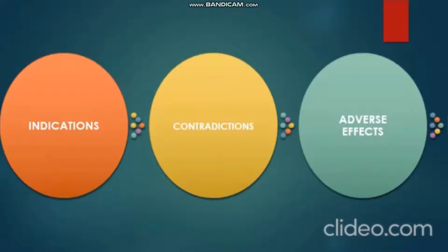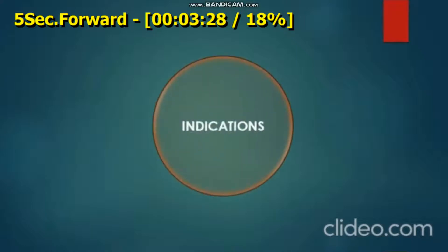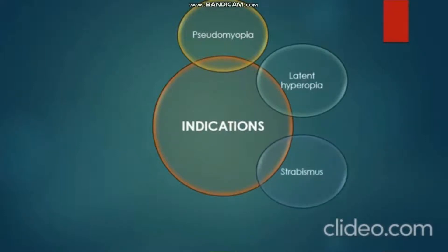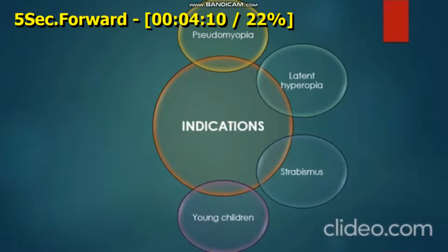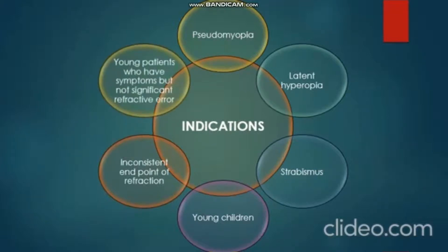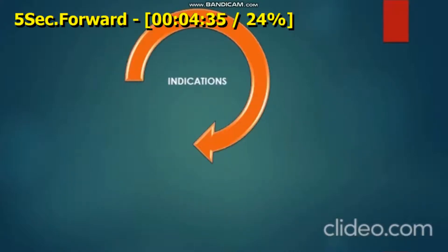We'll discuss indications, contraindications, and adverse effects of cycloplegic drugs. The indications for cycloplegic refraction are: pseudomyopia, latent hyperopia, strabismus, young children — we most commonly perform cycloplegic refraction in young children — inconsistent endpoint of refraction, and young patients who have symptoms but nothing significant.